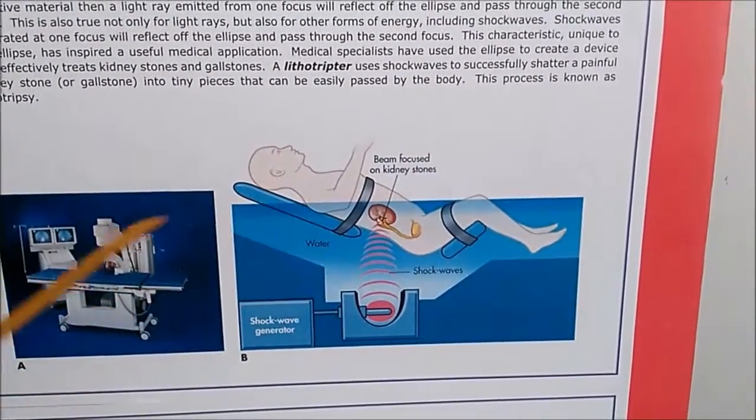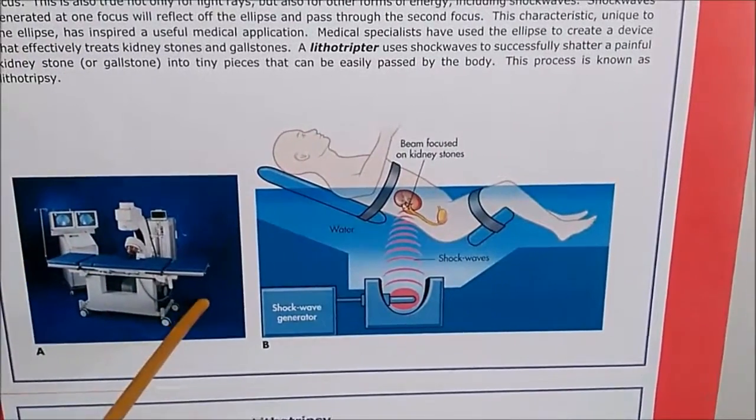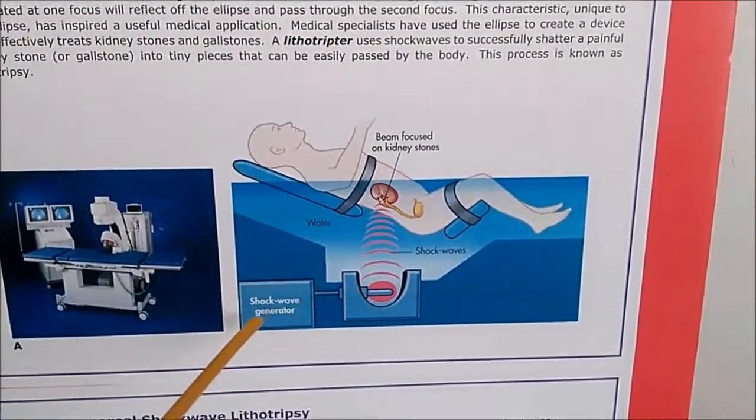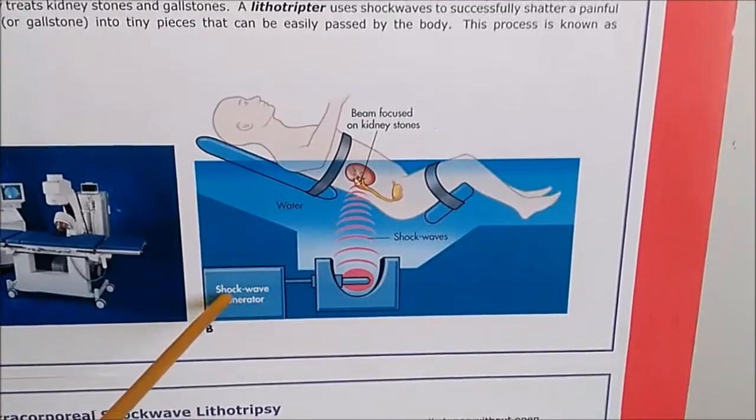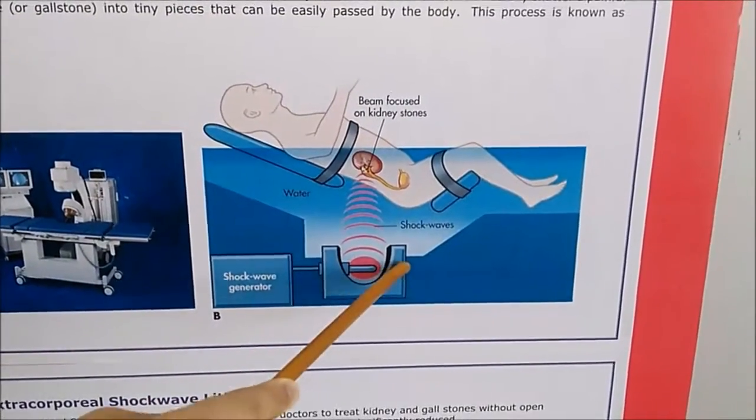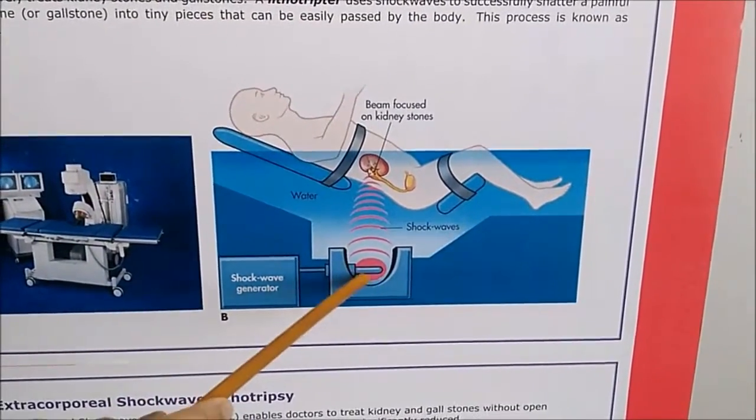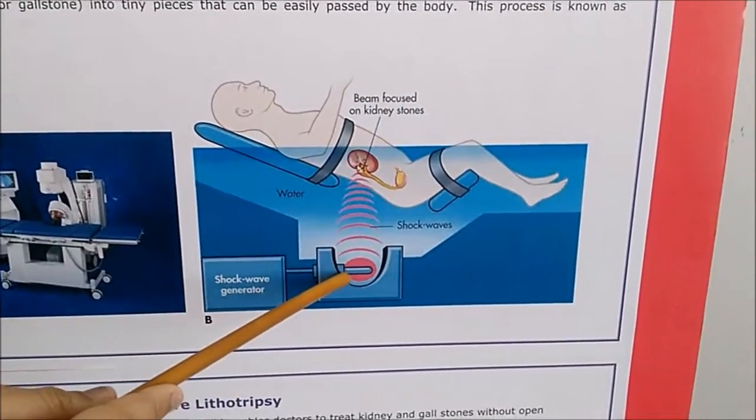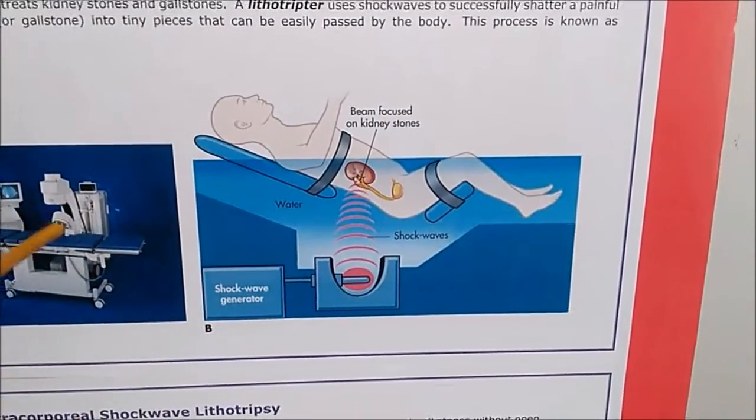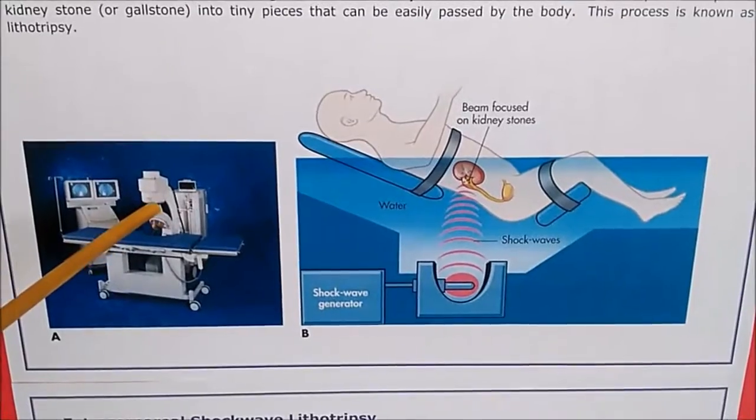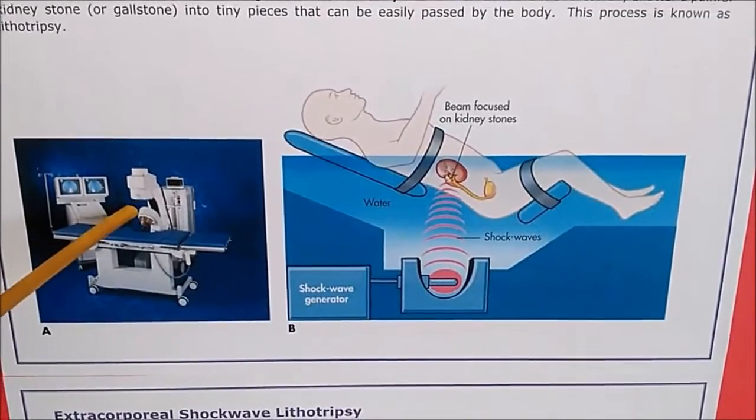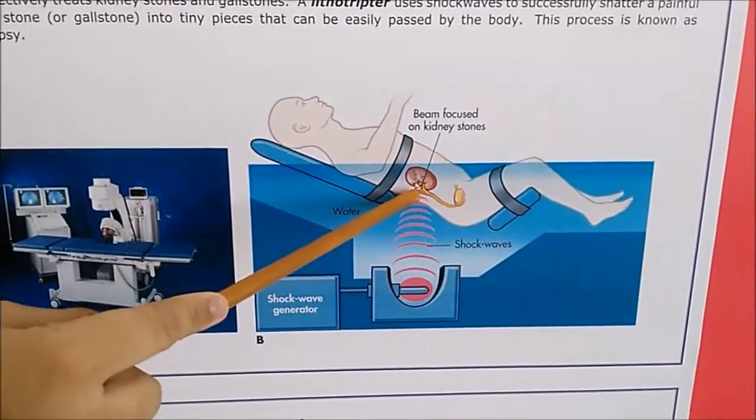The patient is put on a water cushion under the shock wave generator, which is a half ellipse. The shock wave generator generates shock waves. This right here is the x-ray. The x-ray locates where the kidney stone is.